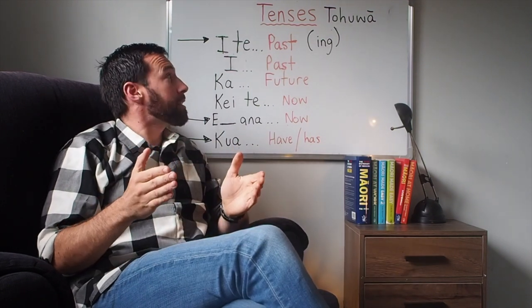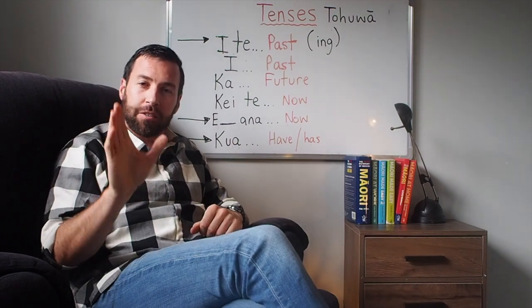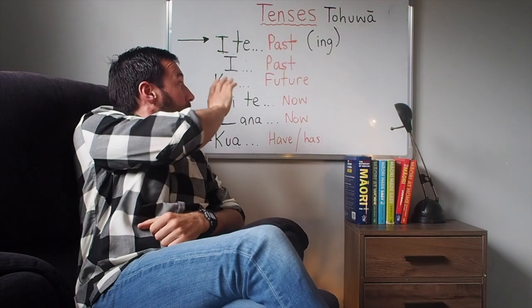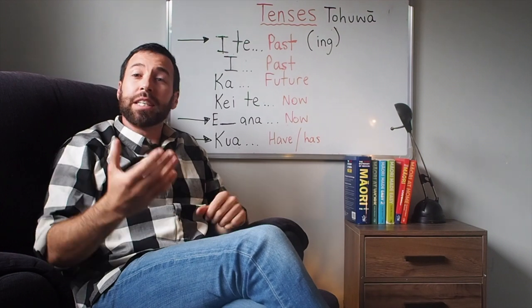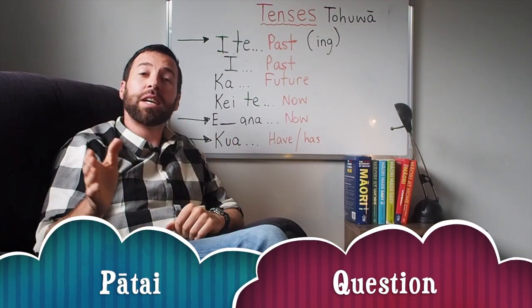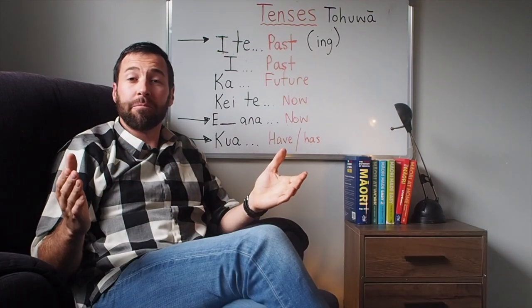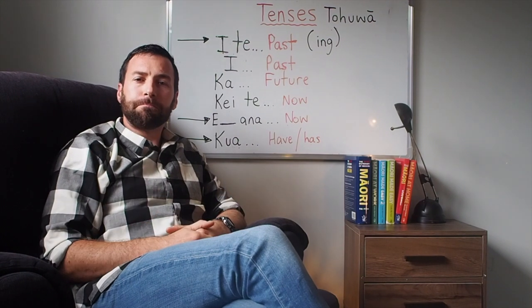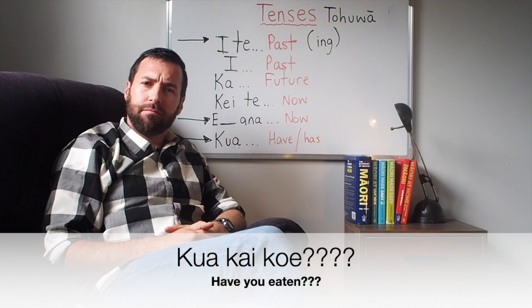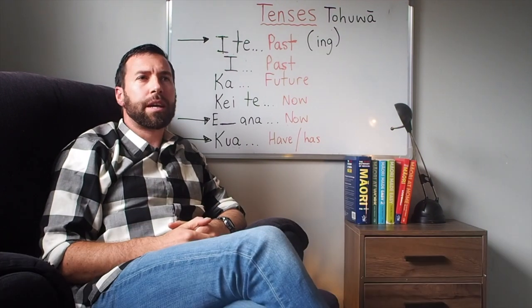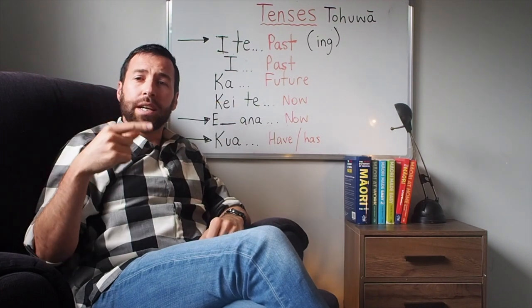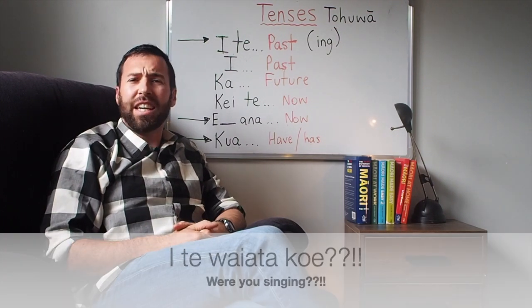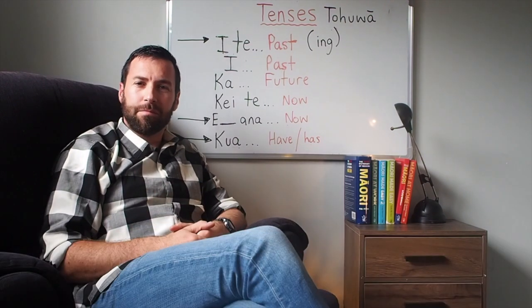We've covered all six tohu wā, tense markers. But catch this — I'm about to double your reo kete, your basket of knowledge. We can change a statement into a pātai just by the tone of our voice. For example, 'kua kai koe' means 'you have eaten', but say 'kua kai koe?' and it becomes 'have you eaten?' Similarly, 'i te waiata koe' means 'you were singing', but 'i te waiata koe?' means 'were you singing?' You've doubled your kete.